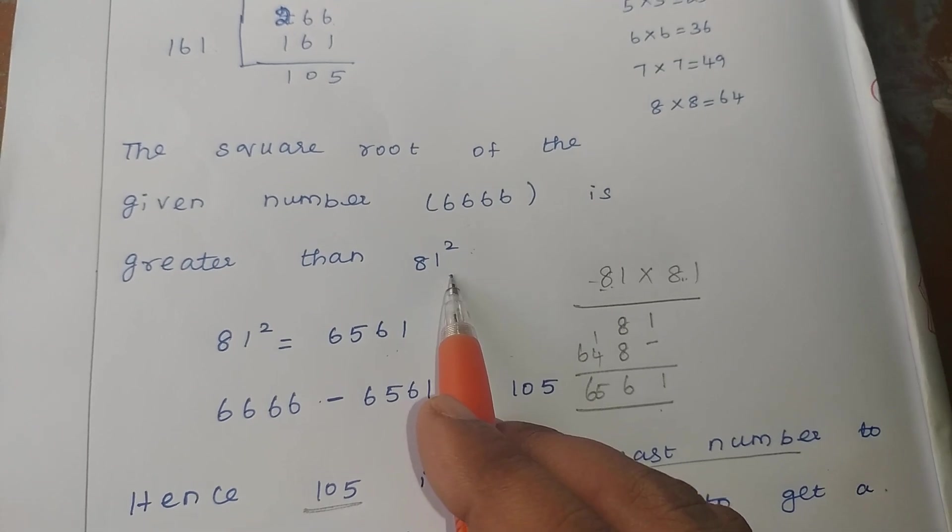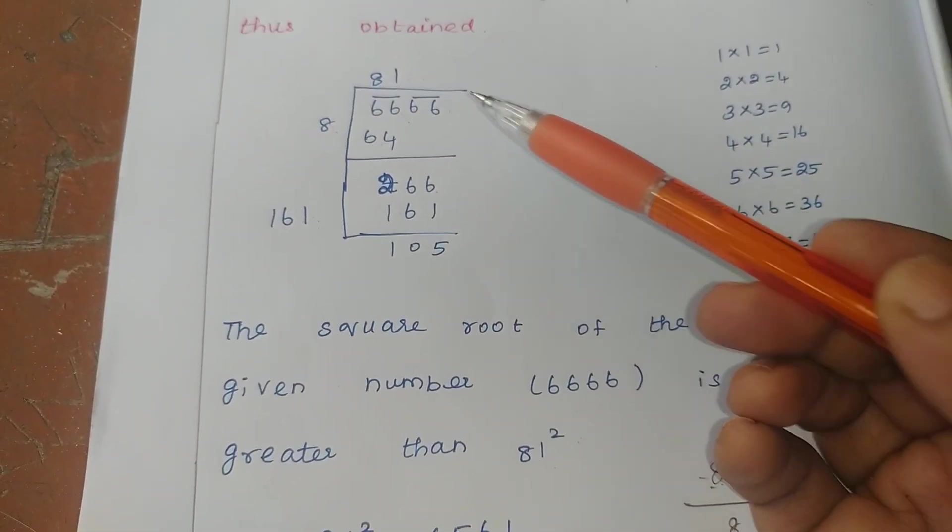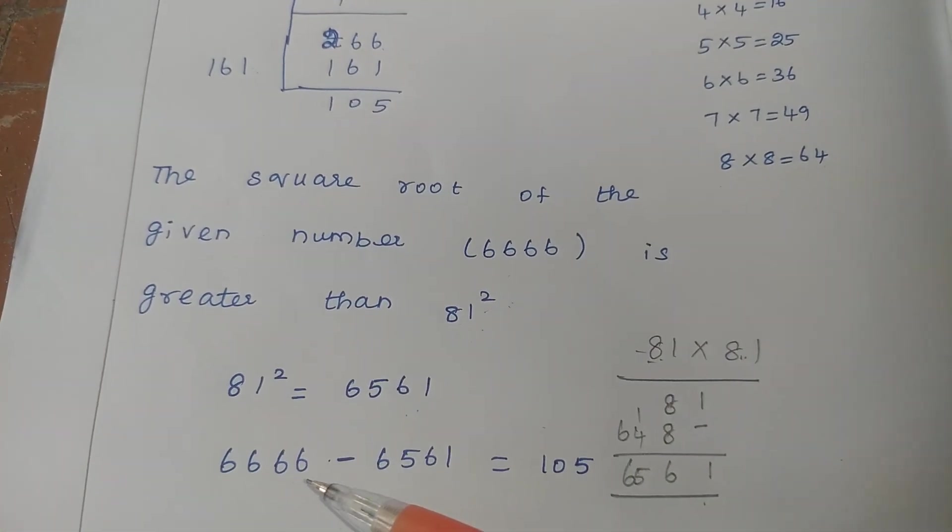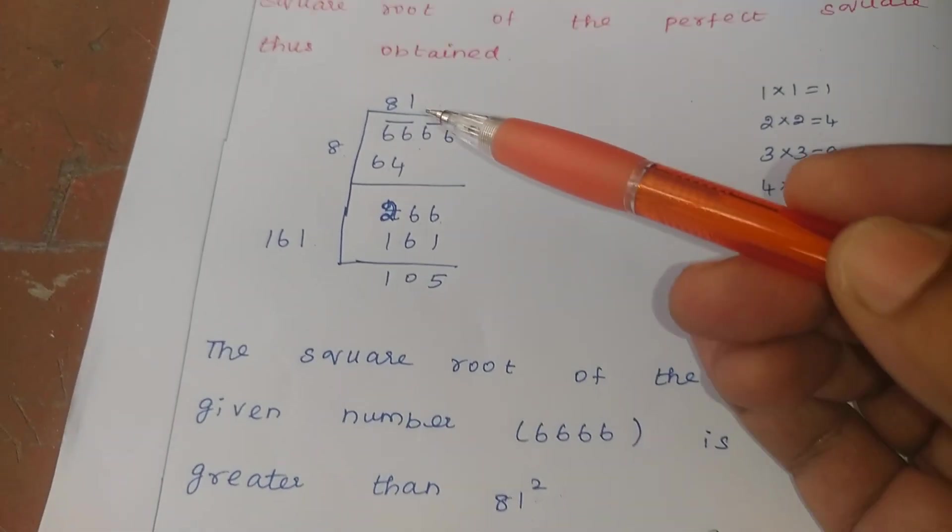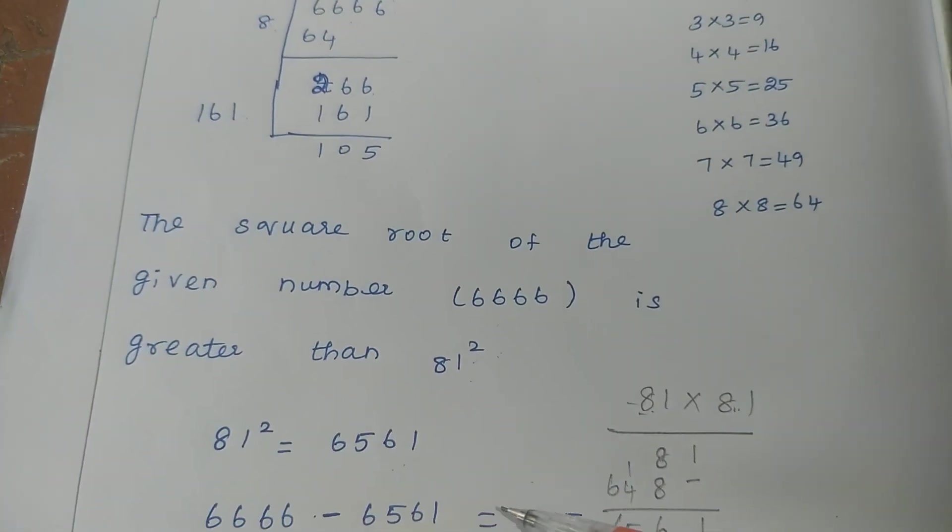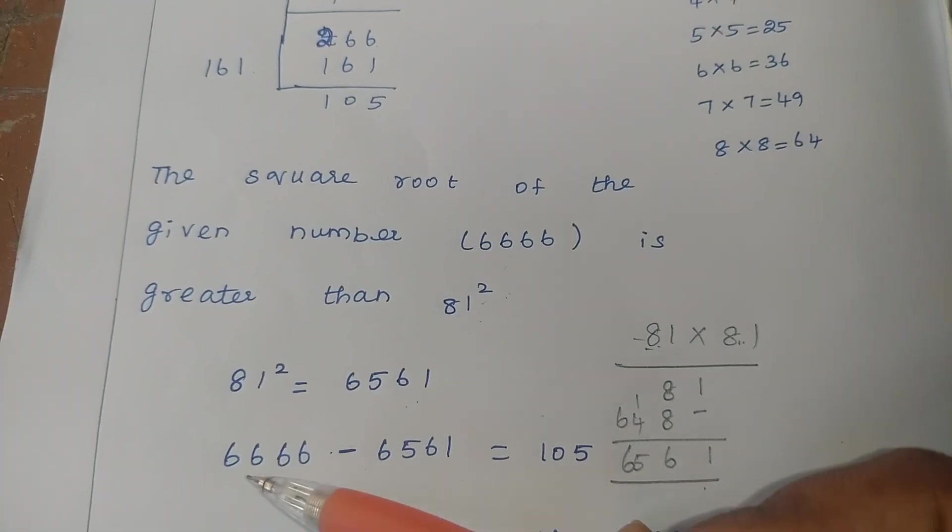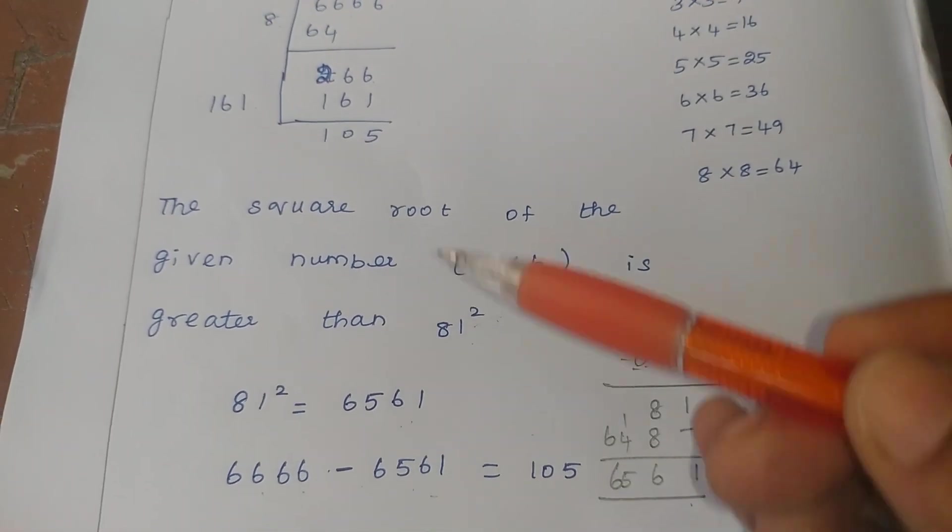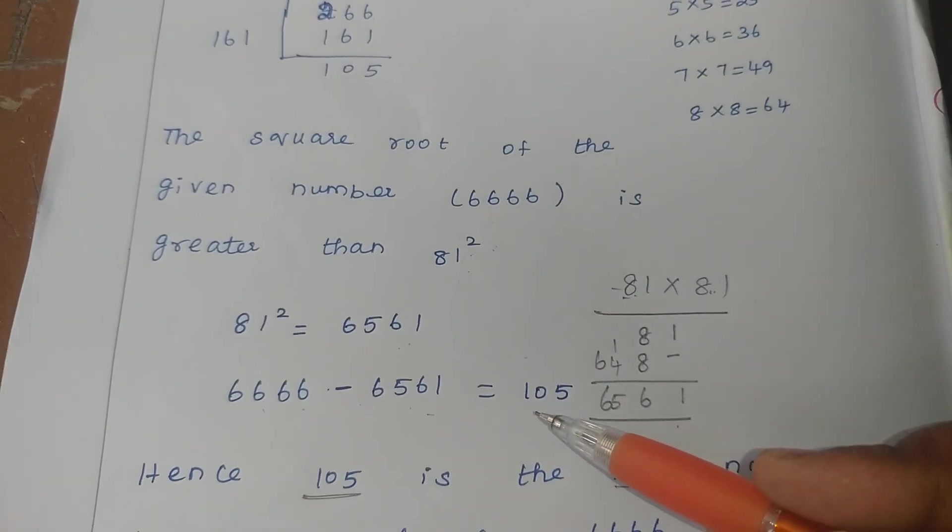But this number is greater. Once we compare this given number, this 81 is what? Greater. So what is the given number? 6666 minus what number we got here for 81 square? 6561. So if we subtract this number from this greater number, from greater number to the 81 square, we get 105.